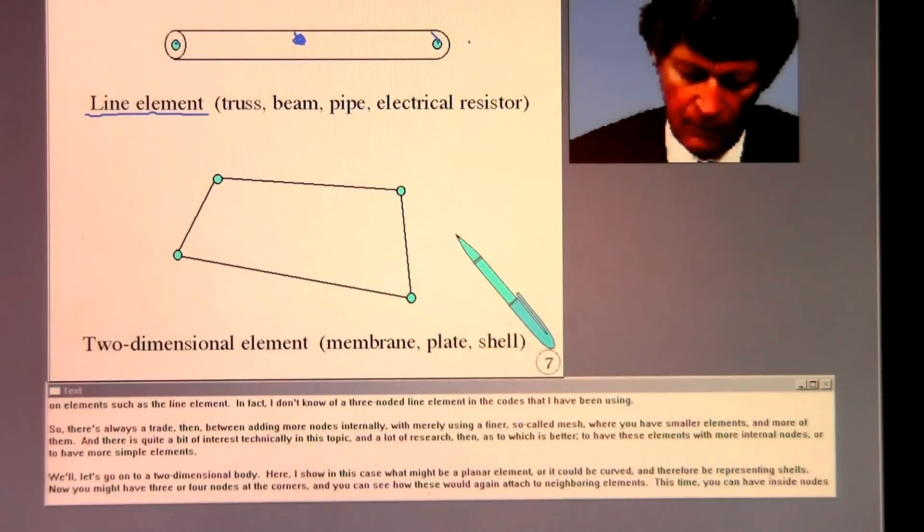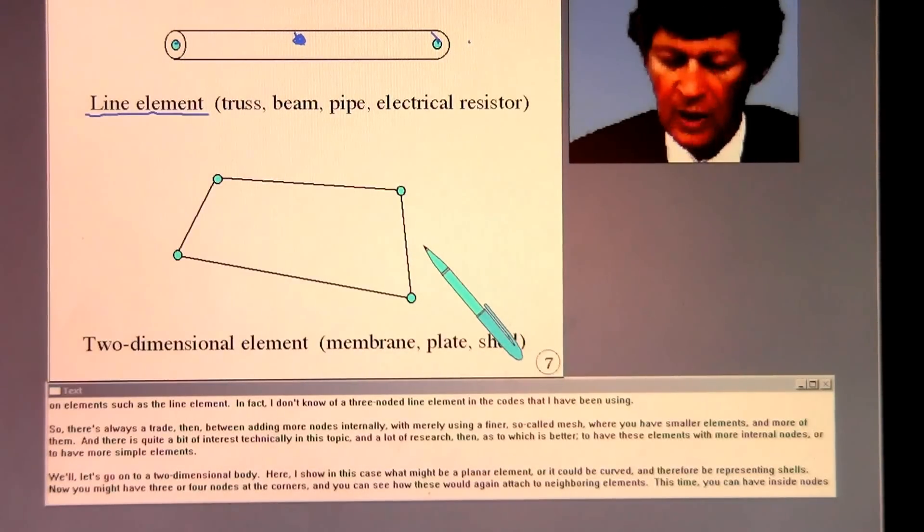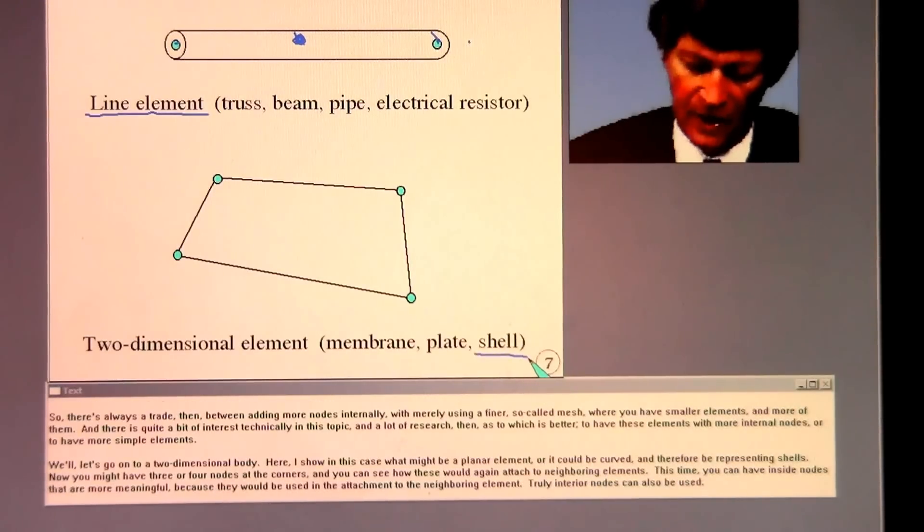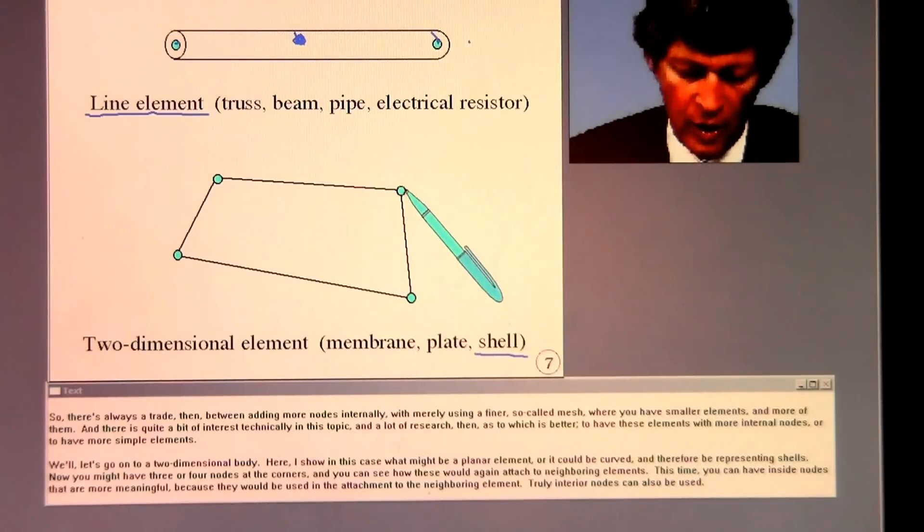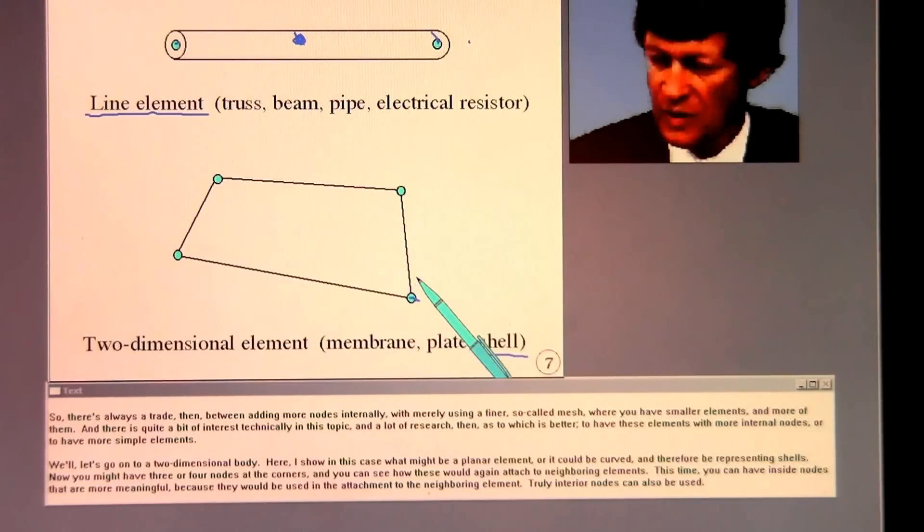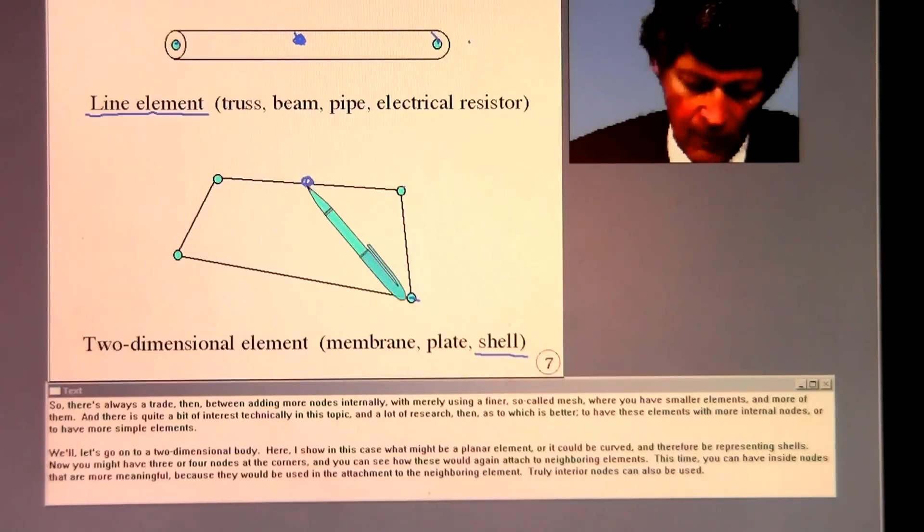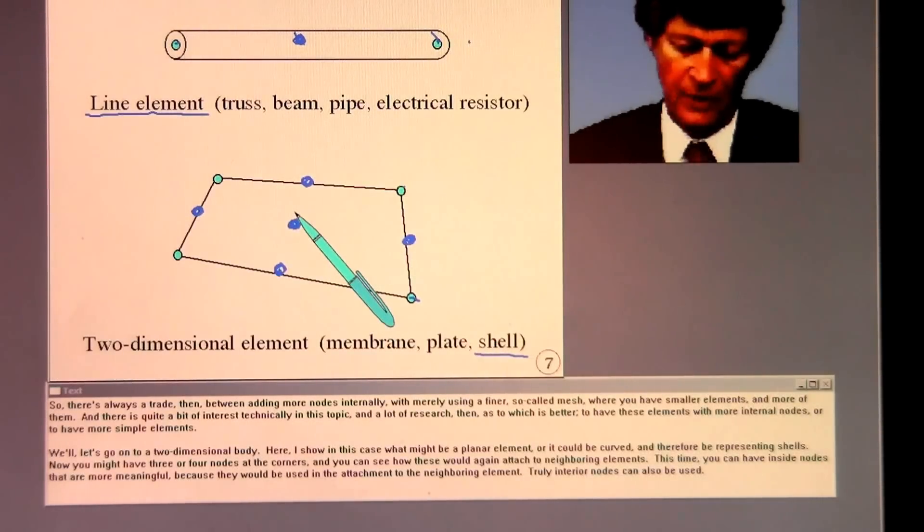Let's go on to a two-dimensional body here. I show, in this case, what might be a planar element, or it could be curved and therefore be representing shells. You might have three or four nodes at the corners, and you can see how these would attach to neighboring elements. This time, you can have mid-side nodes that are more meaningful because they would be used in the attachment to the neighboring elements. Truly, interior nodes can also be used.